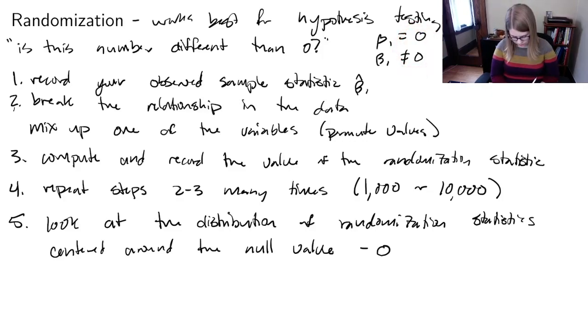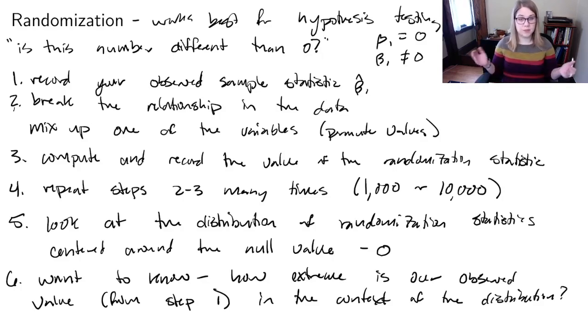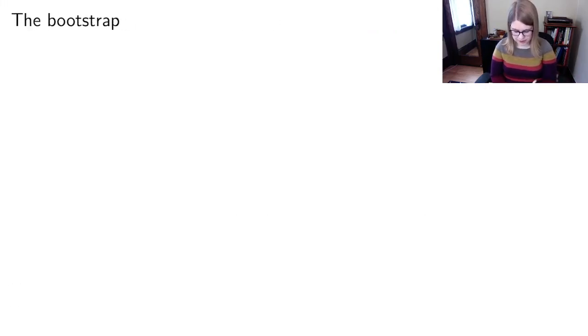You want to know how extreme is our observed value that was from step 1 in the context of the distribution. You can basically compute the p-value—the percentage of the distribution that's as extreme or more extreme than the observed value. So if it's really weird then you would probably reject the null, and if it's not that extreme then you would fail to reject the null.